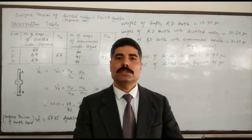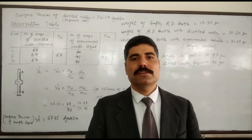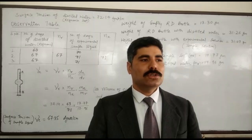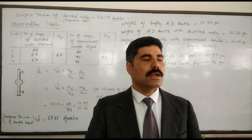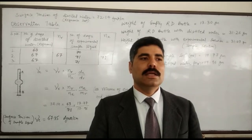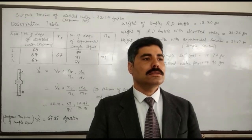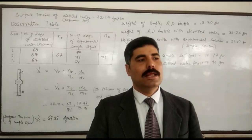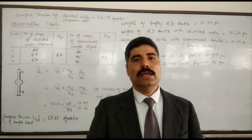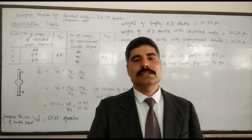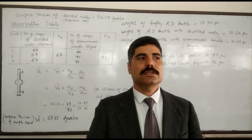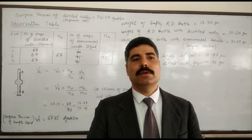First of all, let's talk about surface tension. What do we mean by surface tension? Surface tension is the force in Newton acting at right angles along the surface of a liquid one meter in length. Its unit in the SI system is Newton per meter, and in the CGS system is dynes per centimeter.